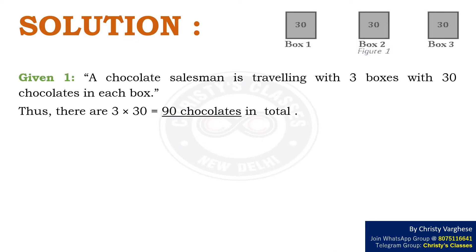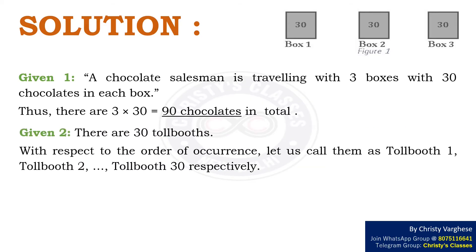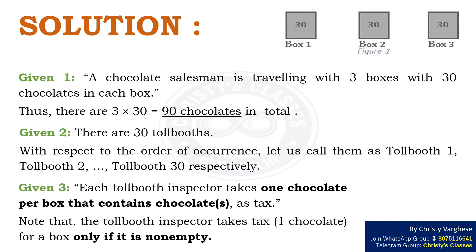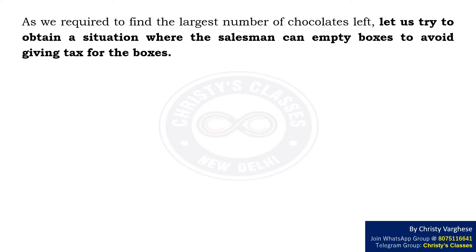It is given that a chocolate salesman is traveling with 3 boxes with 30 chocolates in each box. Thus, there are 3 × 30, i.e. 90 chocolates in total. There are also 30 tollbooths — tollbooth 1, tollbooth 2, and so on till tollbooth 30. Each tollbooth inspector takes 1 chocolate per box that contains chocolate as toll, and takes toll only for a box that is non-empty. Since we need to find the largest number of chocolates left, let us try to obtain a situation where the salesman can empty boxes to avoid giving toll for those boxes.